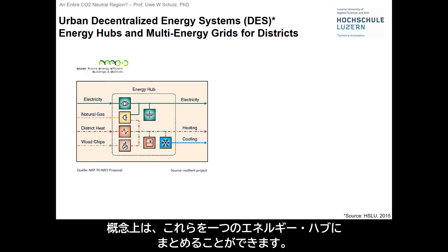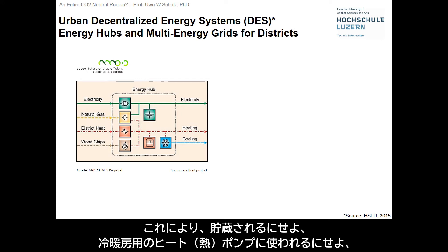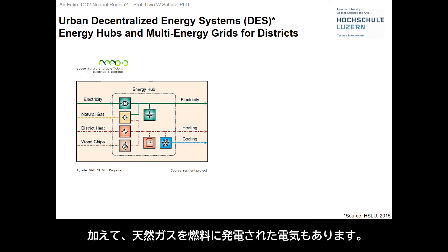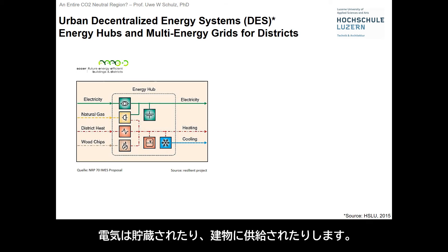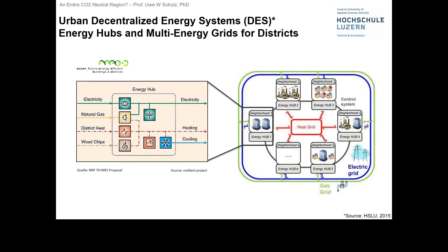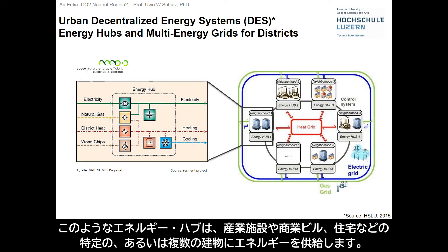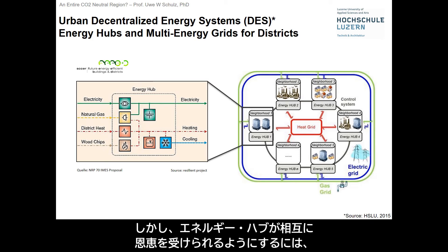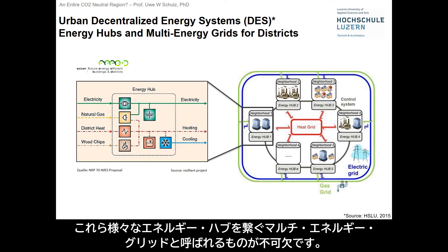Conceptually, that can be put into one energy hub whereby wood chips, district heat, and natural gas can all serve as a source for thermal energy, either to be stored or used in heat pumps for heating and cooling. In addition, there is electricity which can also be generated from natural gas, stored, and provided to the buildings. Such energy hubs are then supplied to very specific kinds of heat sources and sinks, like industry, commercial buildings, residential buildings, or mixtures thereof. However, in order to benefit from one another, it's going to be critical to have what we would call a multi-energy grid connecting all those various energy hubs.